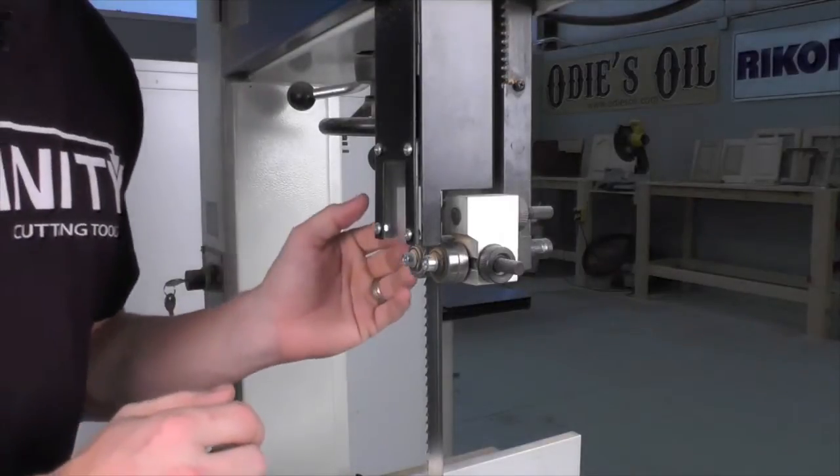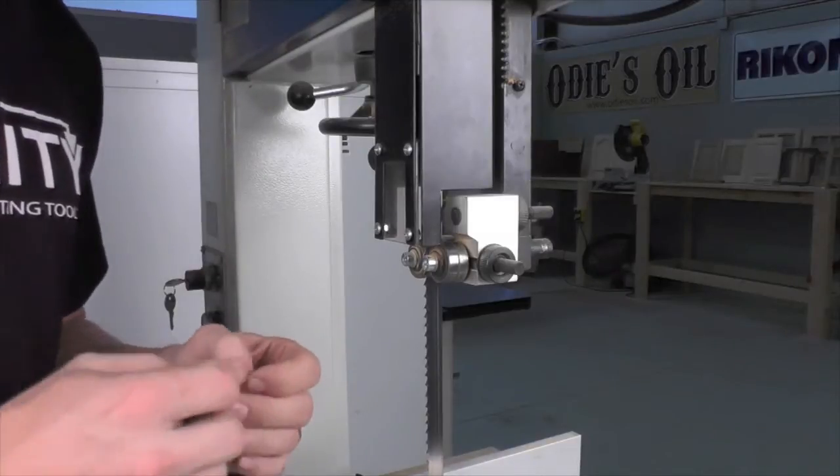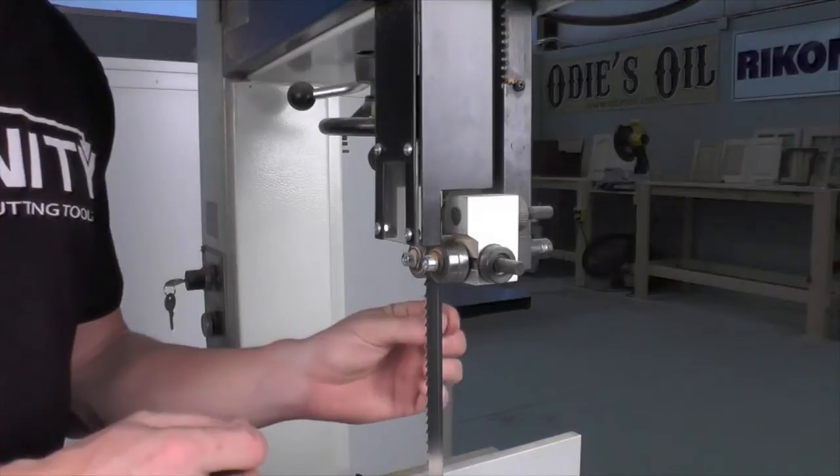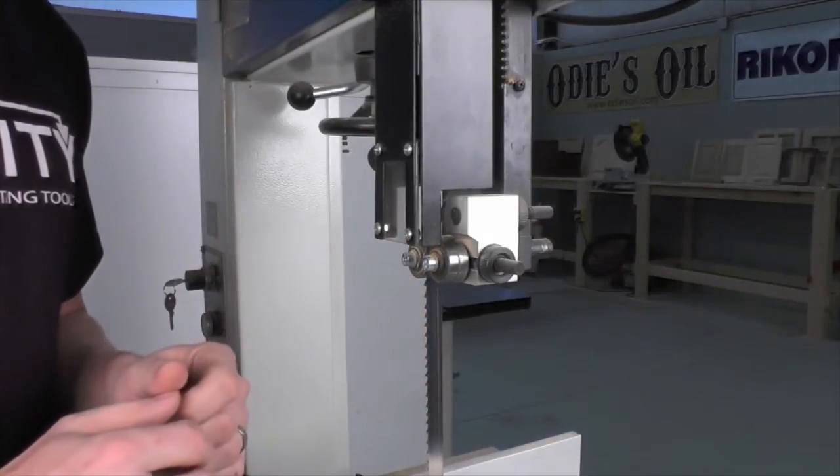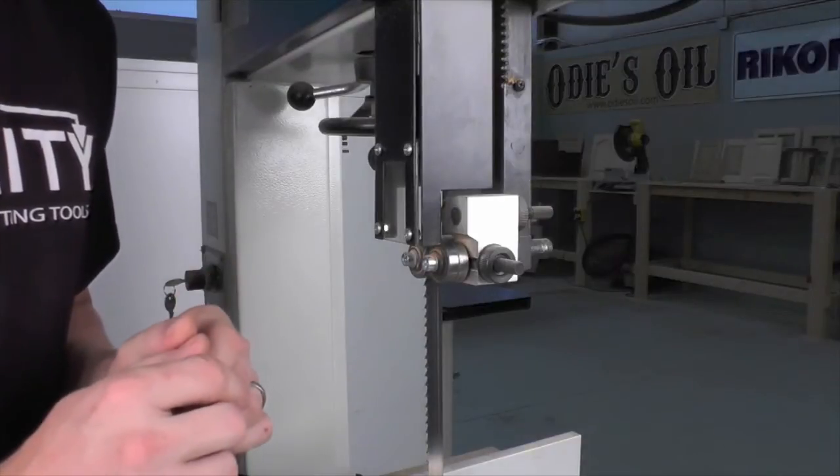The back guide needs to be set very close to the blade as well. For this, I like to use a business card as a feeler gauge. That's going to give you that perfect distance from the back edge of the blade to that back guide. I would do this for both the upper and lower guides on the saw.